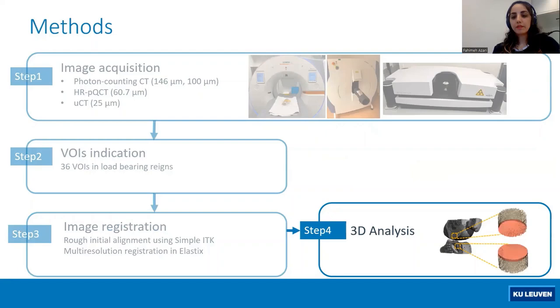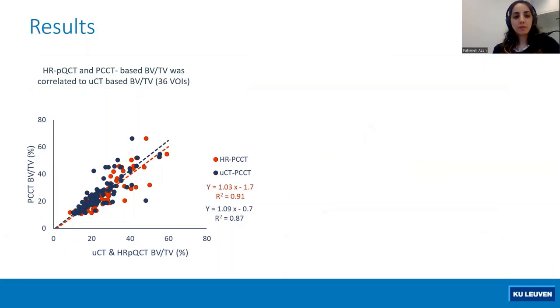Let's take a look at the results. As you can see in this scatter plot, bone volume fraction values measured by photon counting CT on the vertical axis are highly correlated to the bone volume fraction values measured by microCT and HRPQCT on the horizontal axis.